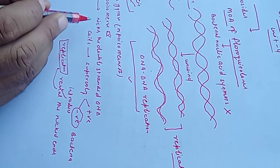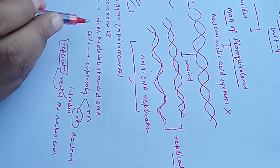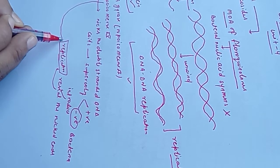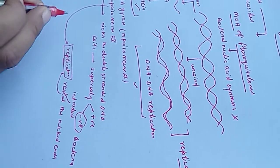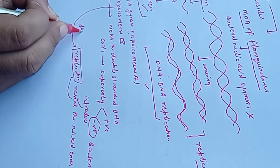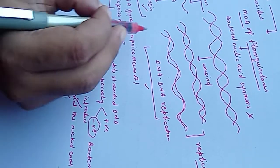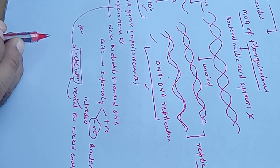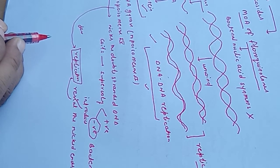DNA gyrase and topoisomerase 4 help in the production of daughter cells. This is the role of topoisomerase 4 in bacterial replication.